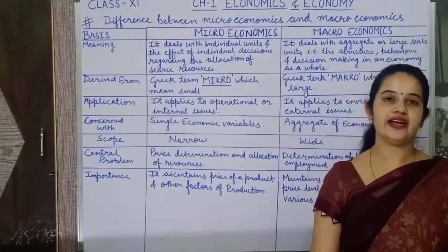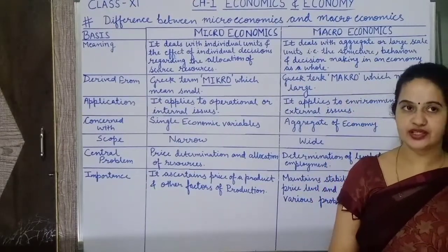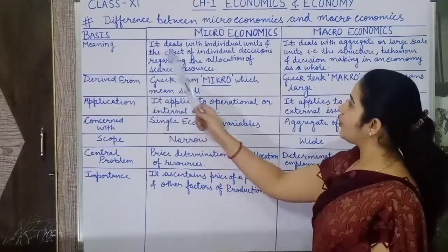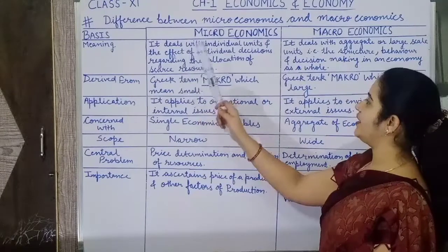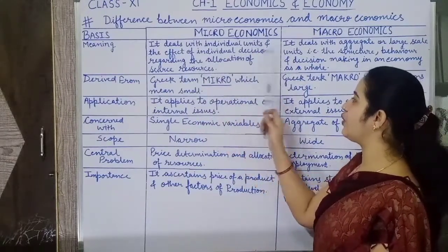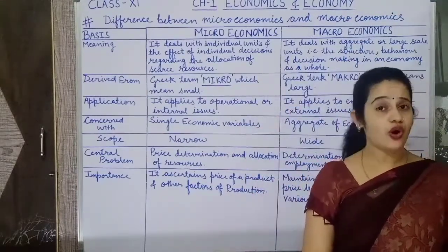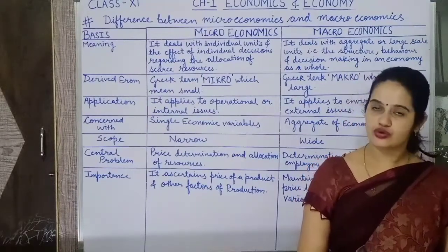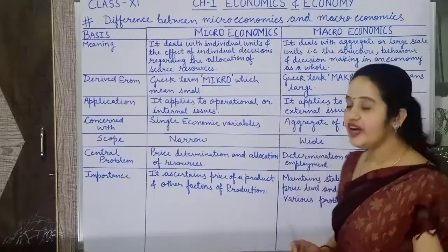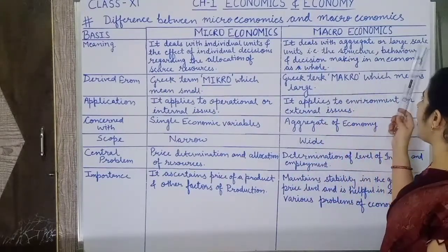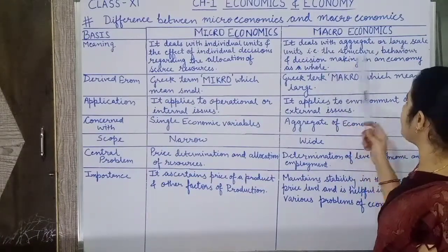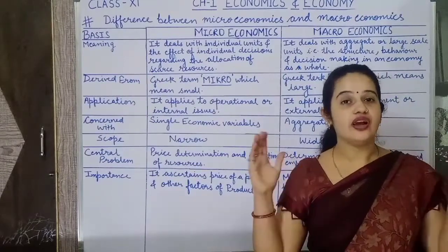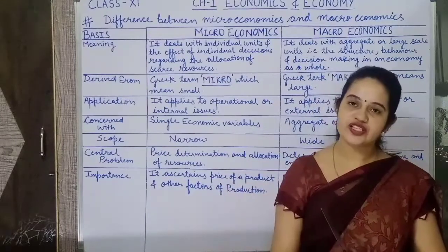Now let's discuss the difference between microeconomics and macroeconomics. The first difference is meaning: microeconomics deals with individual units and the effect of individual decisions regarding the allocation of scarce resources — such as consumer, household, firm, industry. On the other hand, macroeconomics deals with aggregate or large-scale units, that is, the structure, behavior, and decision-making of an economy as a whole, dealing with variables such as total consumption and total investment.